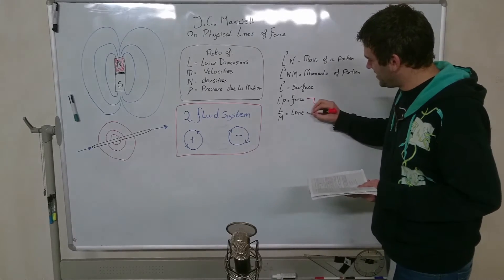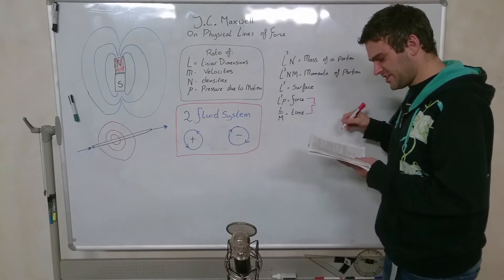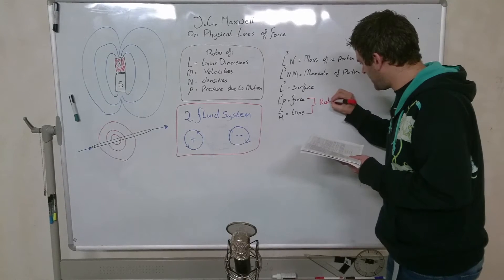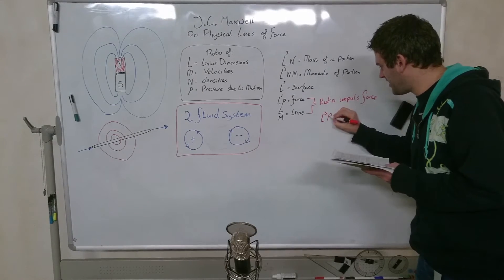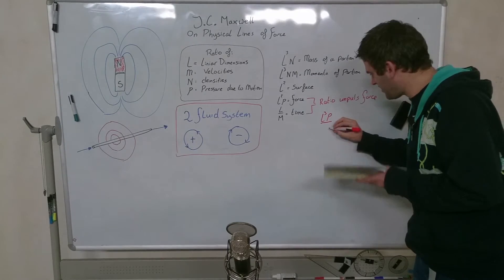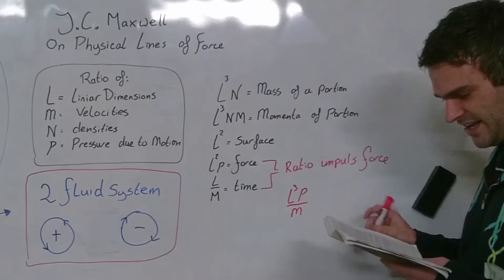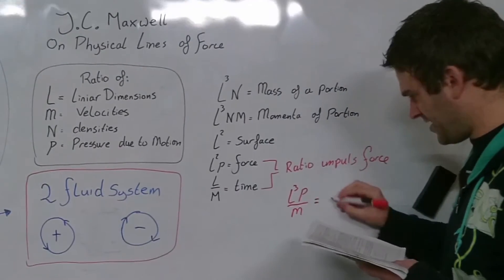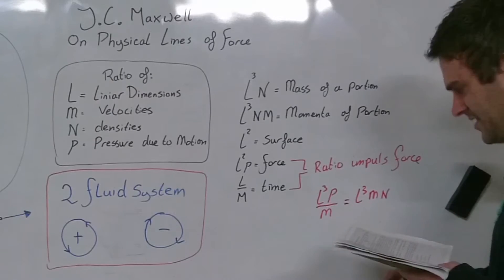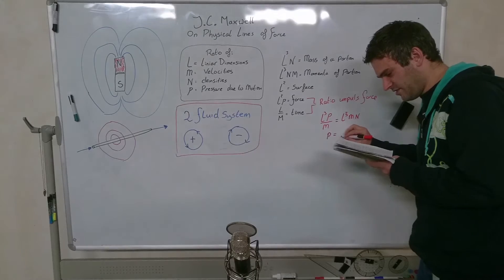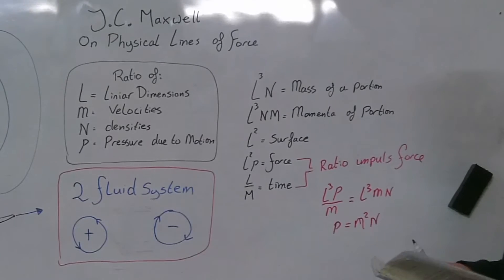That gives us that the ratio of the impulse of force, let's write that down. The ratio of impulse of force would be L cubed P divided by M. That would be the ratio of impulse of force. And we have now L cubed times P divided by M. And this would be the same as L cubed times M times N. Or we can even make this a little bit easier and say that P is equal to M squared times N. So a pressure would be a velocity squared times density.